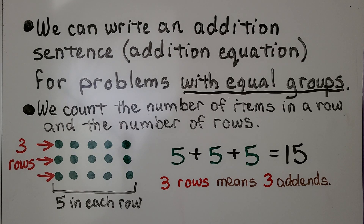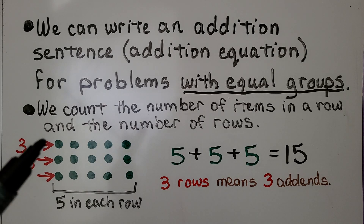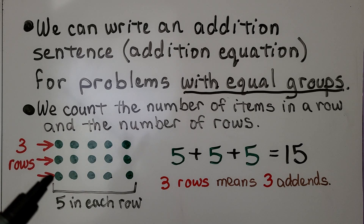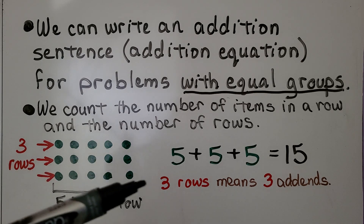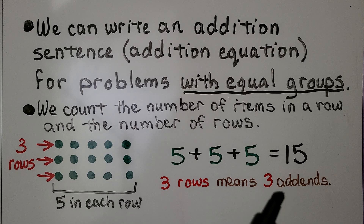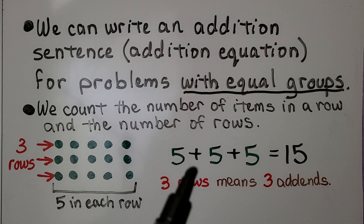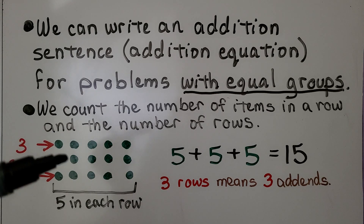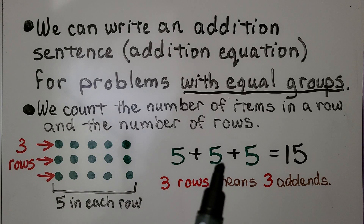We can count the number of items in a row and the number of rows. Here we have one, two, three rows. Remember, rows go across. And we have five in each row. That means we're going to have three rows, so there's three addends. We have 5 plus 5 plus 5. And 5 plus 5 is 10, plus another 5, is equal to 15.